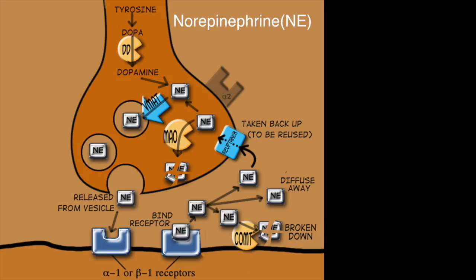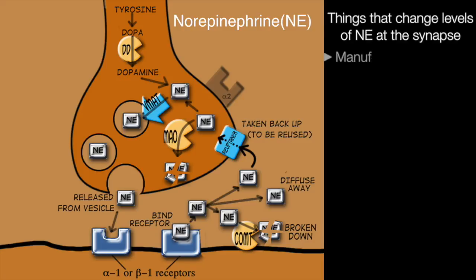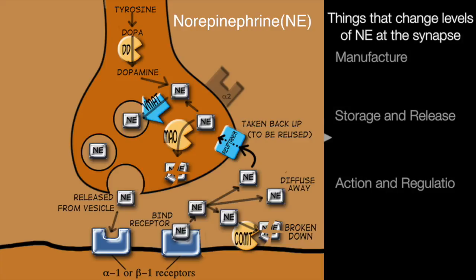Let's start out with norepinephrine, the neurotransmitter responsible for the sympathetic nervous system's actions, and think about the way norepinephrine is normally manufactured, released, and regulated in nerve endings. This is a diagram you'll find in your handout — don't worry about all the details, let's just think about the processes.